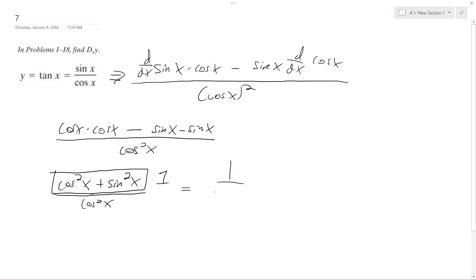So what we get is 1 over cosine squared x, and the same thing as 1 over, or 1 over cosine times 1 over cosine. It's the same thing as secant times secant, which is just secant squared x. And that's it.